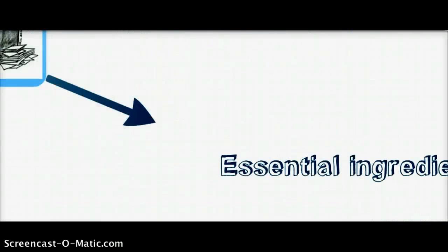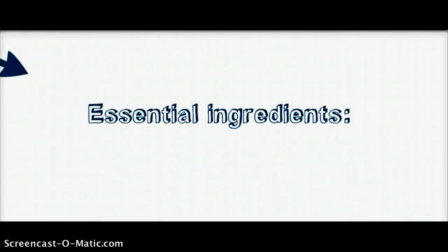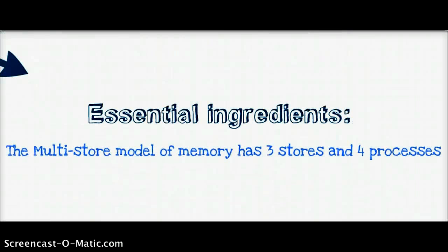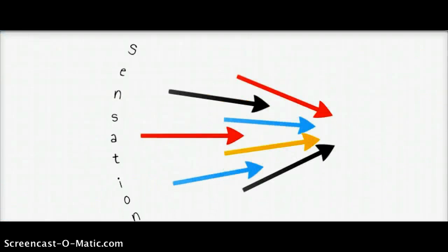Of course as time has gone on, the model has become more complex, so it now comprises at least three stores and at least four processes. For the purposes of the A-level specification, this is probably sufficient.